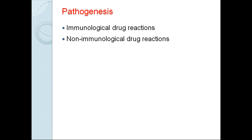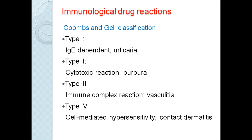Coming to the pathogenesis, there are only two possibilities: immunological drug reactions or non-immunological drug reactions. For immunological drug reactions, this is the Coombs and Gell classification. There are four types. Type 1 is anaphylaxis or IgE-dependent reaction — example is urticaria. Type 2 is cytotoxic reaction — example is purpura. Type 3 is due to immune complex deposition, seen in vasculitis. Type 4 is cell-mediated hypersensitivity, as seen in contact dermatitis.